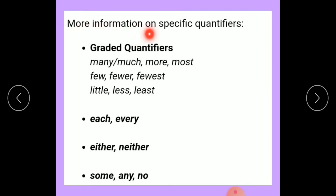More information on specific quantifiers. Graded quantifiers: many, much, more, most, few, fewer, fewest, little, less, least. Each, every. Either, neither. Some, any, no.